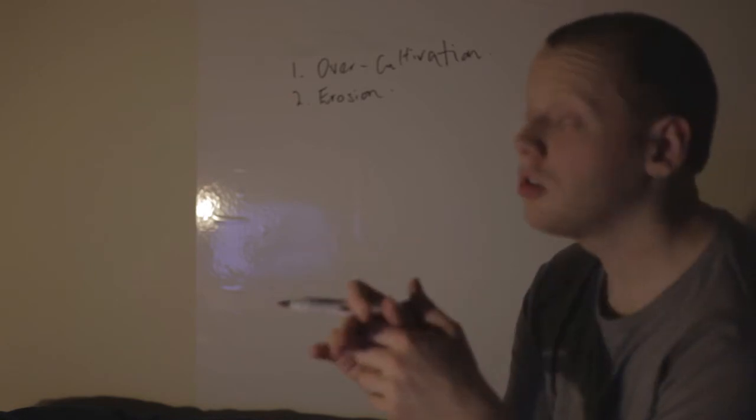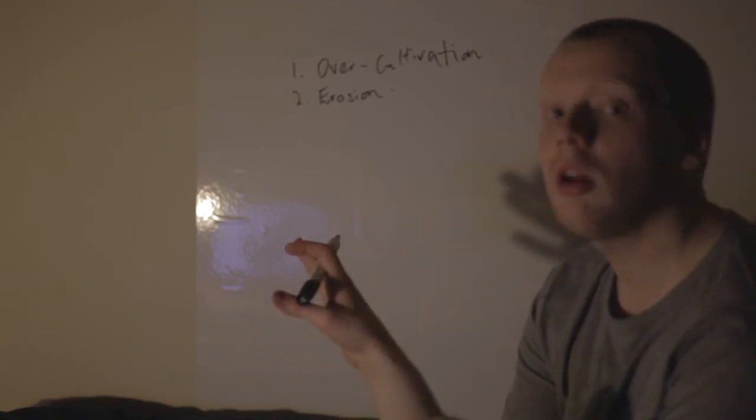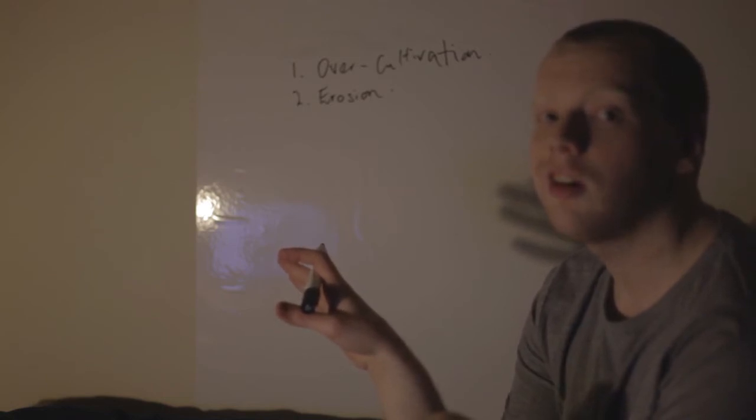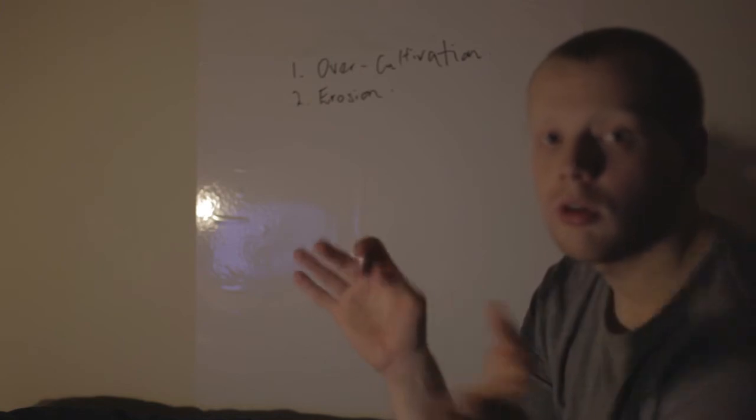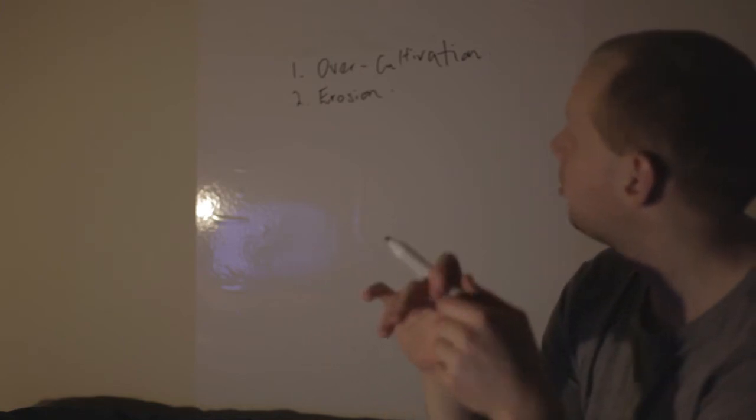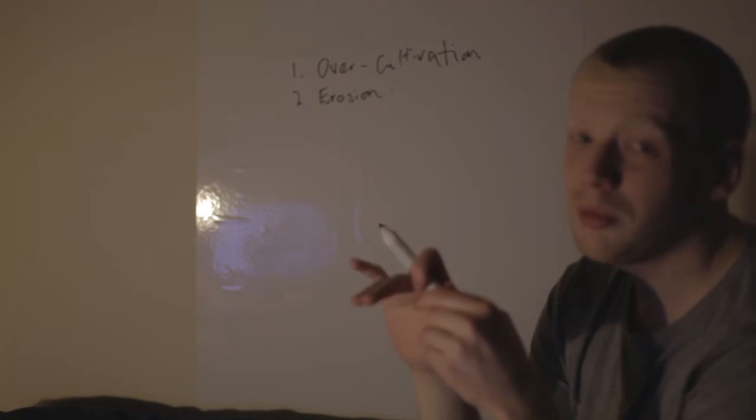So the sun can dry out the soil, then the wind comes along and takes the dusty soil off those plains where you're growing or wherever you're growing. So erosion is a big problem as well.